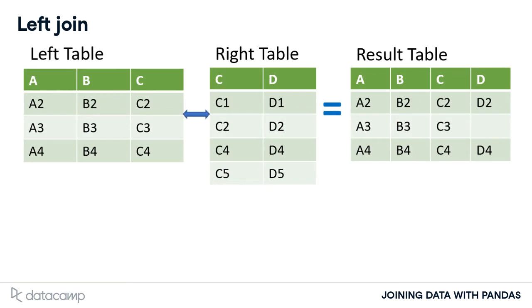Here we have two tables named left and right. We want to use a left join to merge them on key column C. A left join returns all the rows from the left table and only those rows from the right table where column C matches in both. Notice the second row of the merge table — the columns from the left table are filled in, while the column from the right table is not, since there wasn't a match found for that row in the right table.